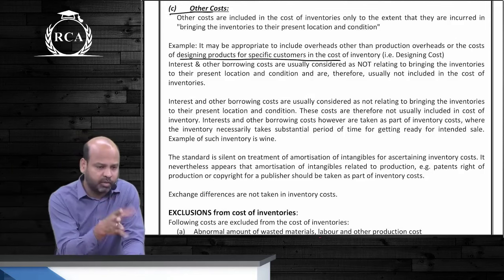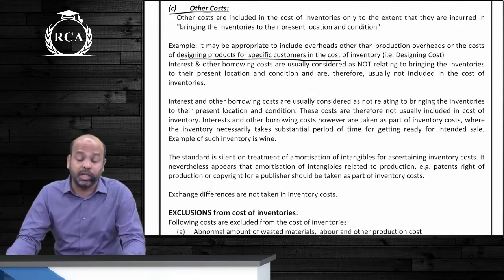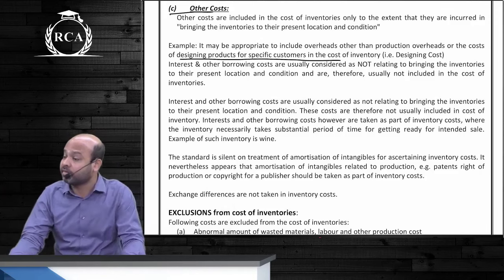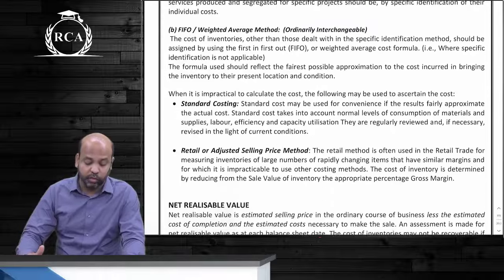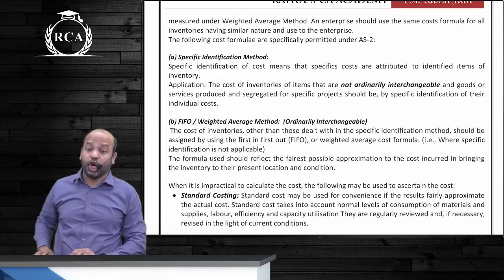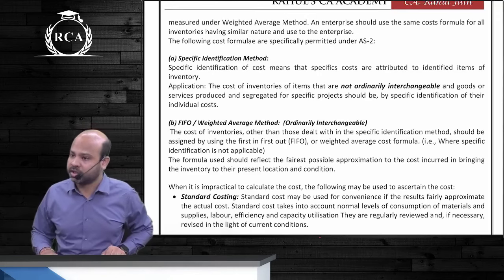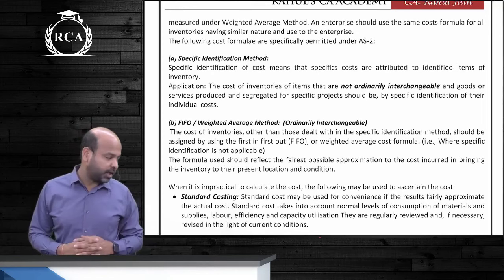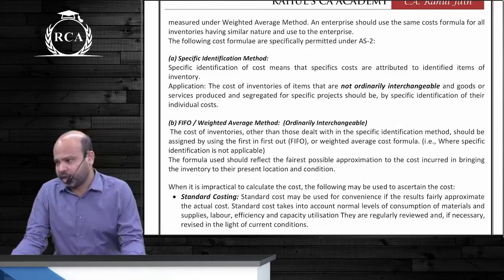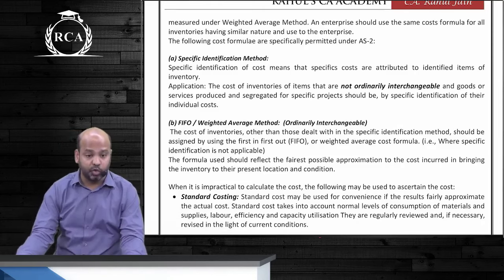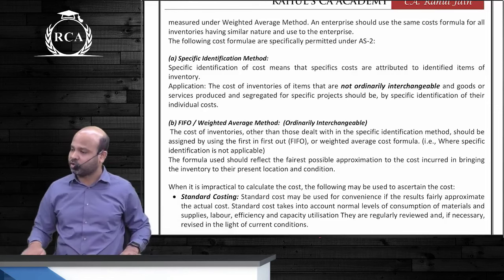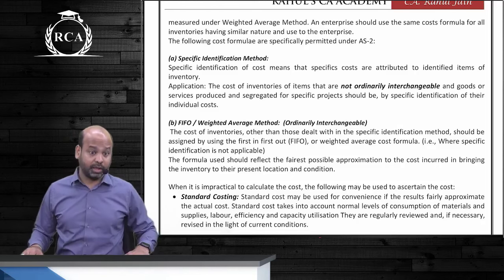Every time raw material is purchased or finished goods are manufactured, the cost per unit need not remain constant throughout the year — this is why we have cost formulae. Inventories are divided into two categories: inventories not ordinarily interchangeable and inventories ordinarily interchangeable. If inventories are not ordinarily interchangeable — that is, raw materials bought for a specific purpose — they are valued using the specific identification method. If inventories are ordinarily interchangeable, we have two options: historical cost methods (FIFO and weighted average) or non-historical cost methods.